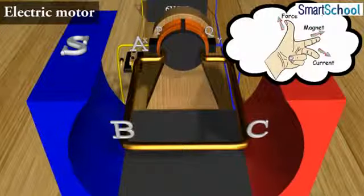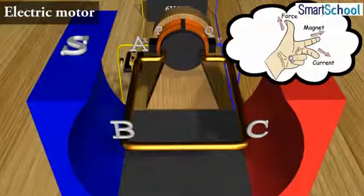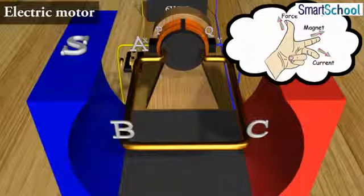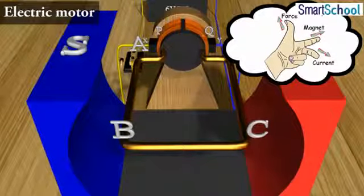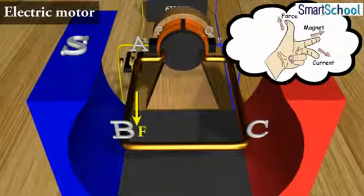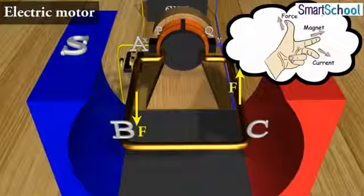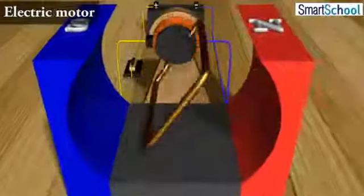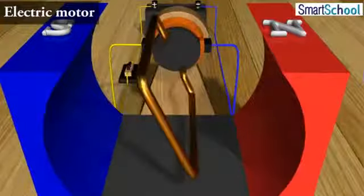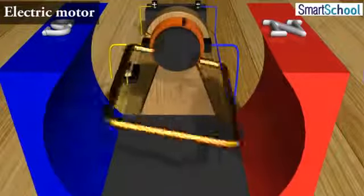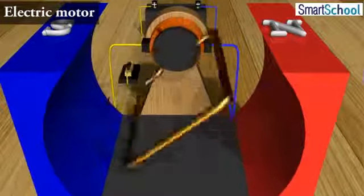On applying Fleming's left-hand rule for the direction of force on a current carrying conductor in a magnetic field, we find that the force acting on arm AB pushes it downwards while the force acting on arm CD pushes it upwards. Thus, the coil and the axle O, mounted free to turn about an axis, rotate anti-clockwise.